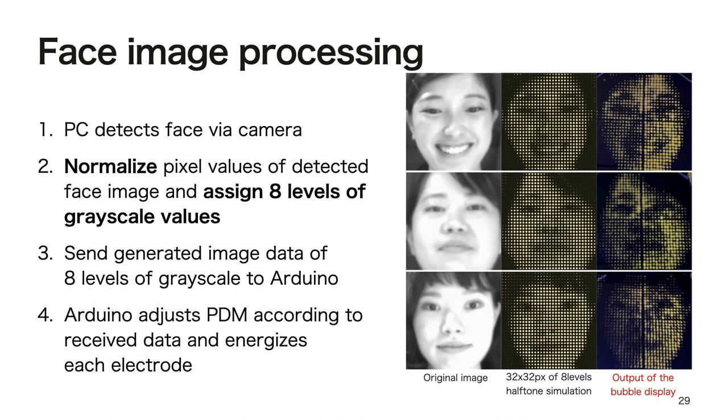I'll briefly explain face image processing. First, the PC detects a face via the camera. We normalize the pixel values of the detected face image and assign eight levels of grayscale values to it. The generated image data of eight grayscale is then sent to the Arduino, which adjusts PDM accordingly, and energizes each electrode to realize the grayscale bubble display.